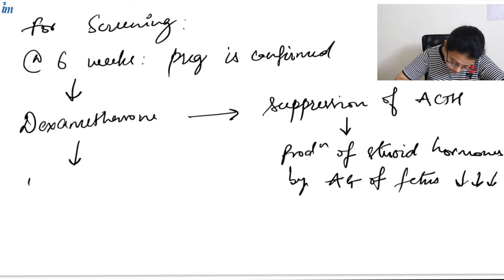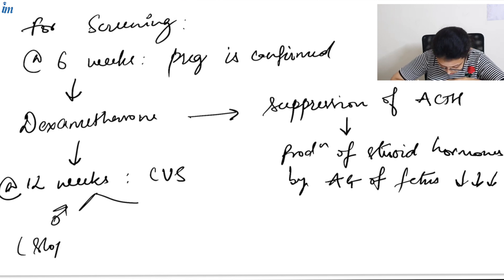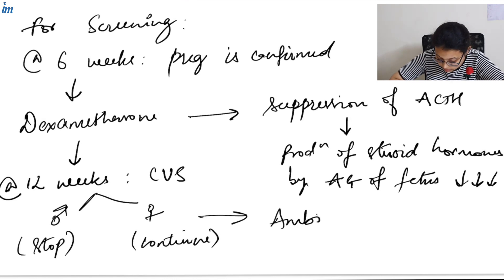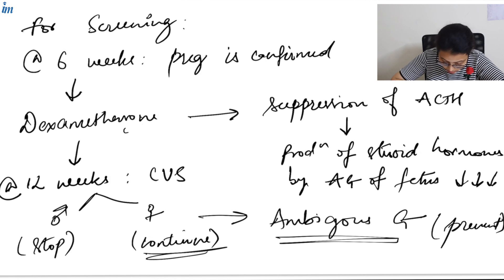Then at 12 weeks of pregnancy, we do chorionic villus sampling. If it's a male child, we stop giving dexamethasone. If it's a female child, we continue to give dexamethasone because female fetuses are the ones that suffer from ambiguous genitalia, and to prevent this condition, we continue dexamethasone.